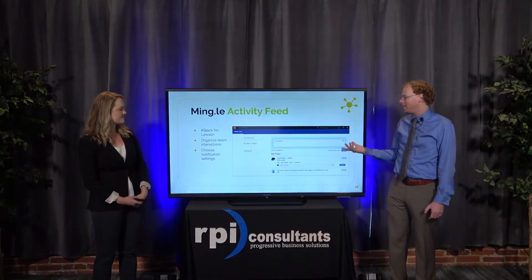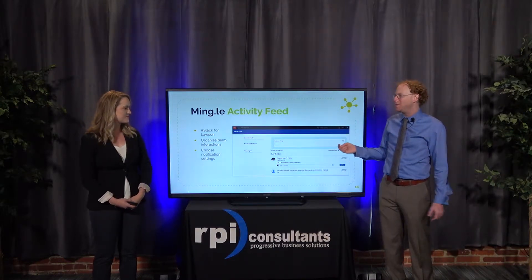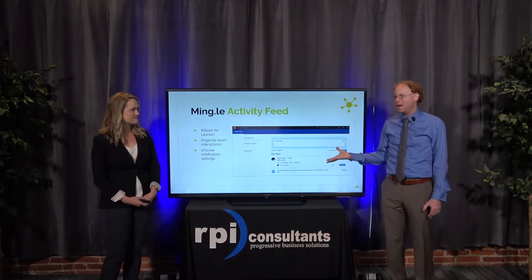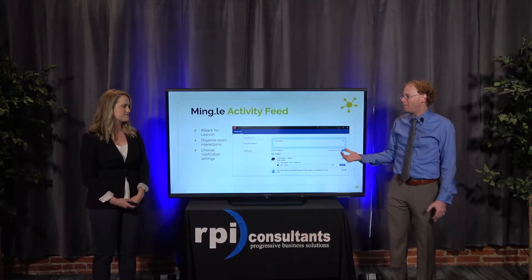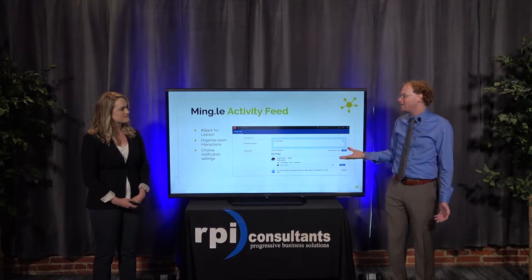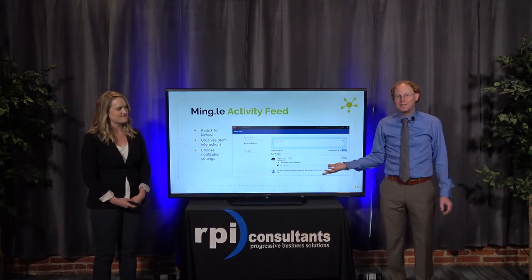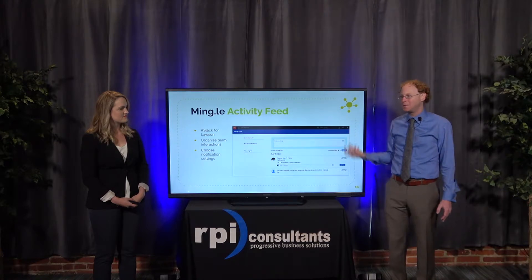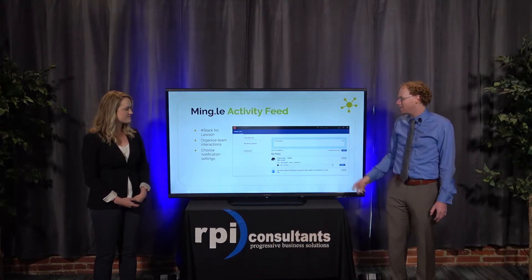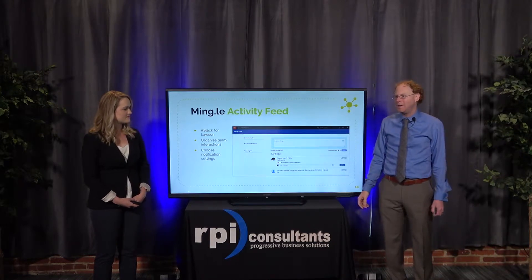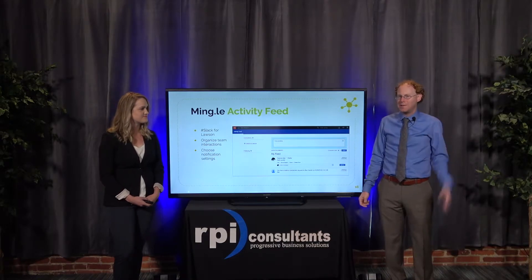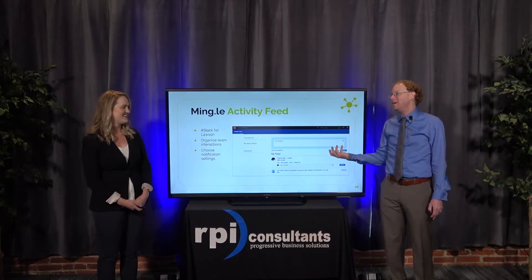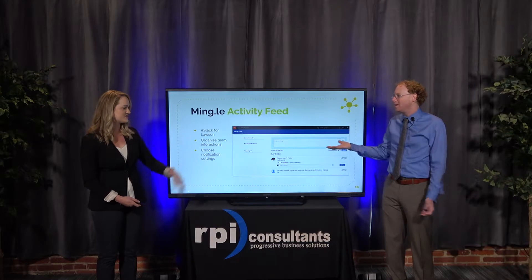Here we have the Mingle activity feed. This is a way for different users to interact with each other within Mingle. At its most basic use, you can send messages between people. Why would you want to do that rather than email or instant messaging? You could think of it like Slack for Lawson — a way to quickly post to a group of people and whoever's available might take a look and respond. The communication channel within Mingle 12 fills a gap in between more traditional lines of business communication, kind of avoiding that reply-all button. And it keeps your messaging right within the solution, so if you're talking about transactions in Lawson, everything's in one place.